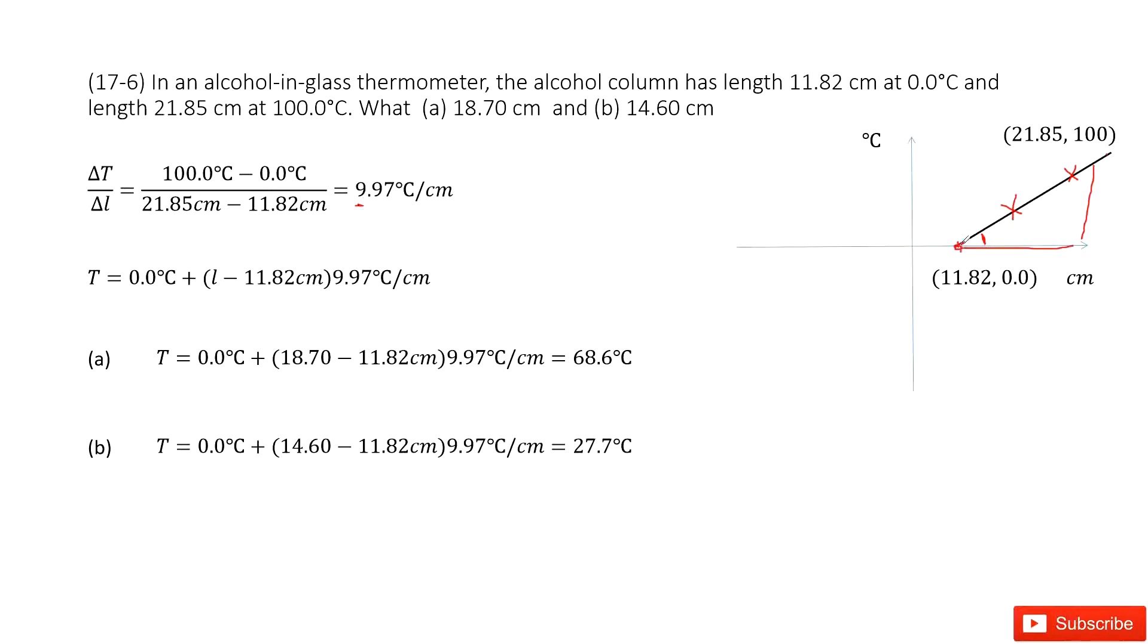Then we choose this point as an initial point and find the function for temperature with the column's length. We can write it as this one.